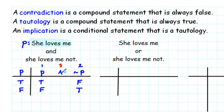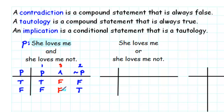Remember that conjunction is only true when both parts are true. In this case, we have true and false — that results in false. And false and true also results in false. So in each case the result is false, which means that 'she loves me and she loves me not' is a contradiction.